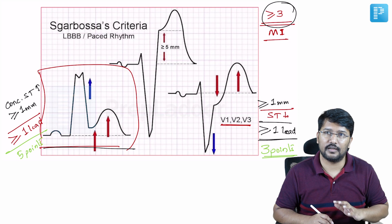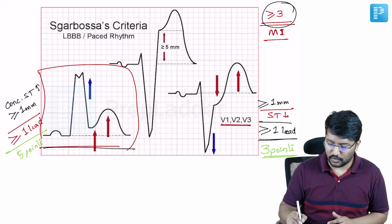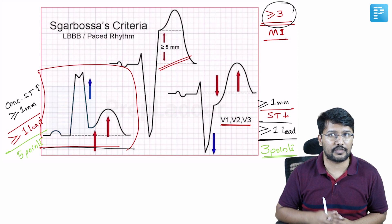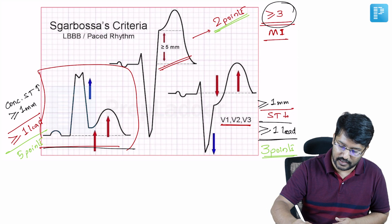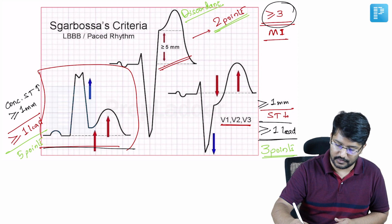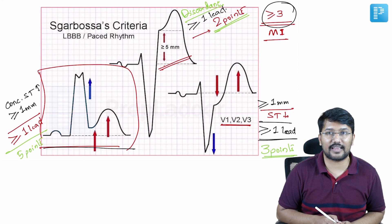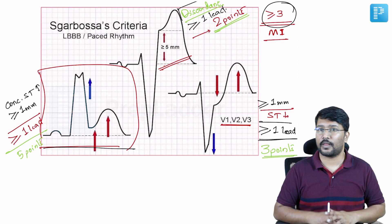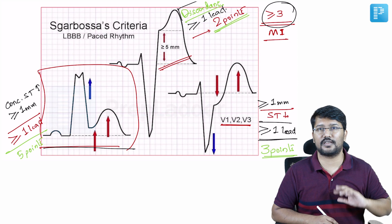The third one is the gray area. Discordant ST elevation has less diagnostic utility and is the one which actually creates confusion. According to Sgarbossa's, if there is more than five millimeters of discordant ST elevation in more than or equal to one lead, the patient gets a score of two points. That means the patient has to satisfy other criteria to be diagnosed as MI when we are talking about discordant ST elevation. You may get an MCQ asking which feature has the least specificity for diagnosis of MI in pre-existing LBBB — the answer is discordant ST elevation.